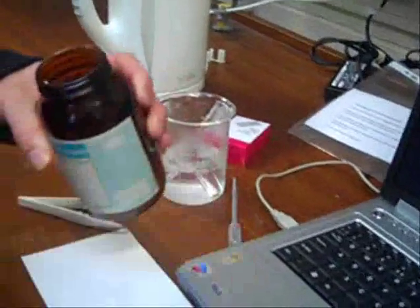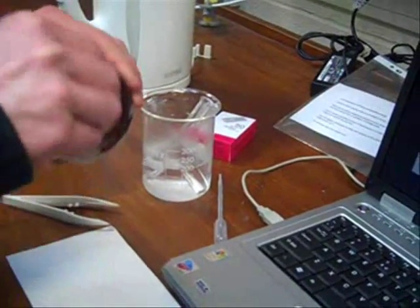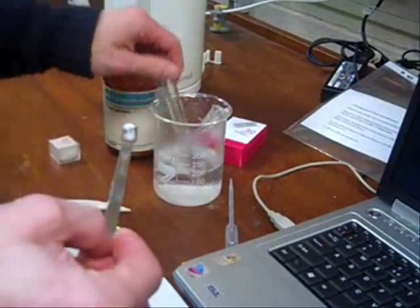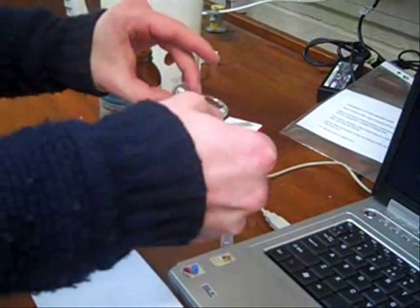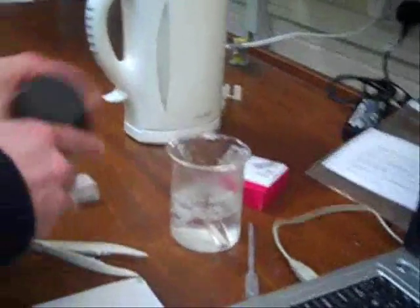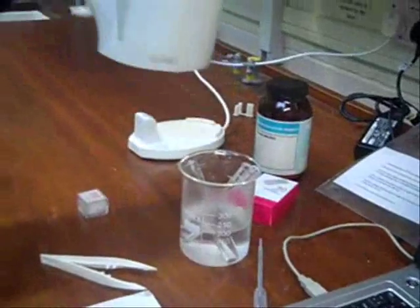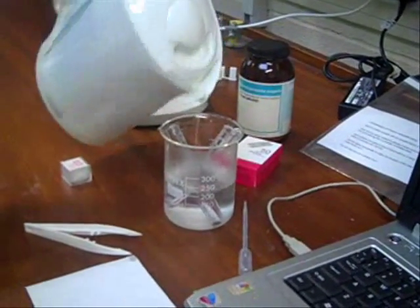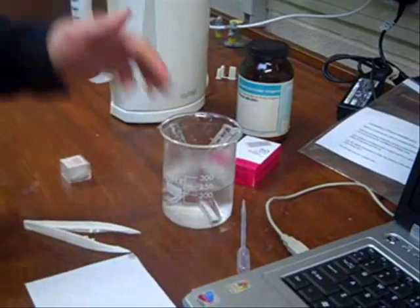So first of all, we're going to be taking some phenyl salicylate and put some in the test tube, carefully replacing the lid, adding some nearly boiling water to the beaker, and the crystals will melt in the test tube by heat transfer.